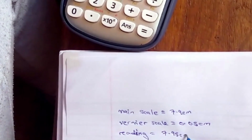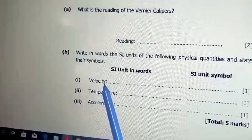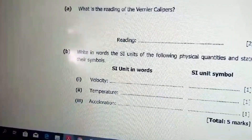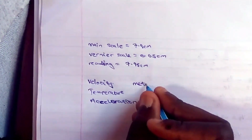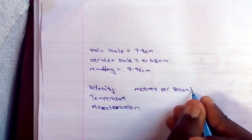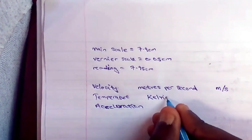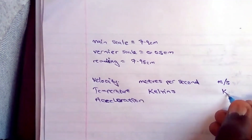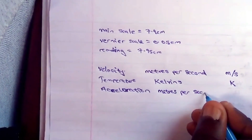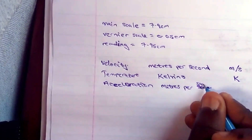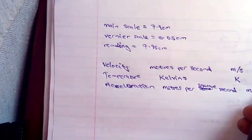The total reading will be 7.9 plus 0.05, which equals 7.95 centimeters. The next question asks us to write in words the SI units of velocity, temperature, and acceleration and state their symbols. For velocity, it's meters per second, symbol m/s. For temperature, it's Kelvin — not degrees Celsius — symbol K. For acceleration, it's meters per second squared, symbol m/s².